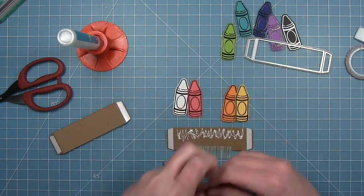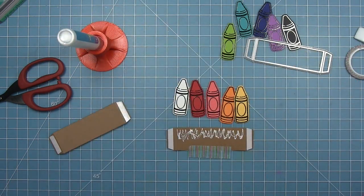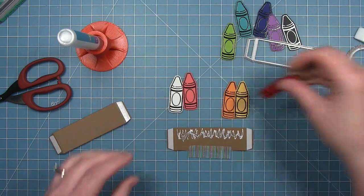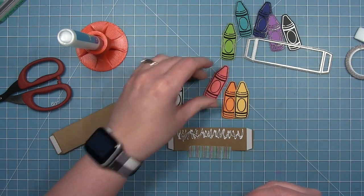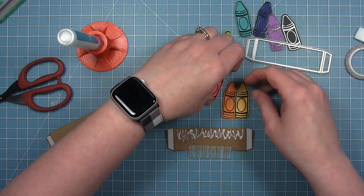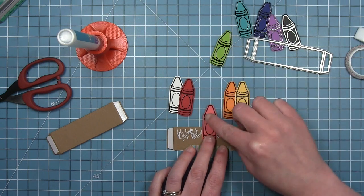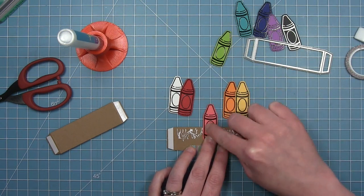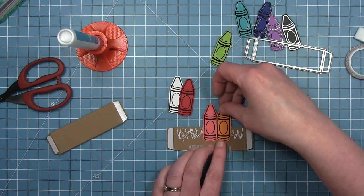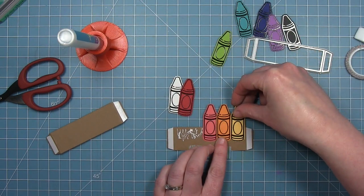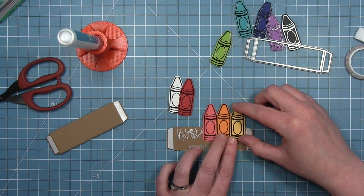So what I've done is I taped my insert down to my grid mat so it's straight, just with some washi tape to hold it in place. I put some liquid glue on it and then I've got my five crayons that are going to go in the front. I'm going to start with the one I want in the middle and then build off that.